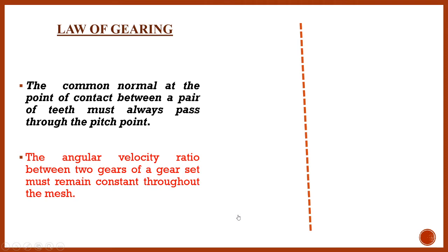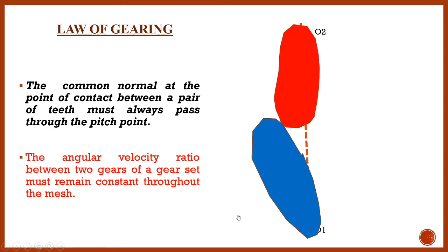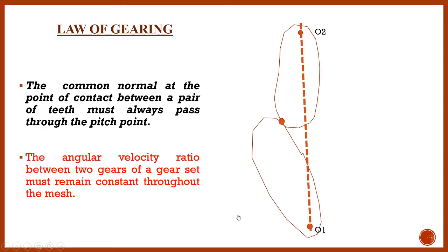We will derive the statement graphically. I have drawn one vertical line, on that line I have considered two points — these are the two centers of rotation of the two gears O1 and O2. This is one tooth of gear 1, this is the second tooth of gear 2, and these two intersect at common point Q. I have drawn one tangent line — this is called the common tangent — and through that common tangent I have drawn the common normal. This common normal intersects the line joining the two centers at point P, which is called the pitch point.